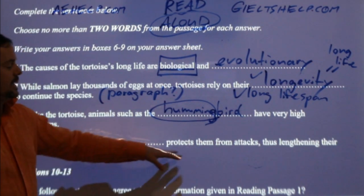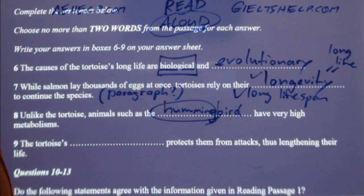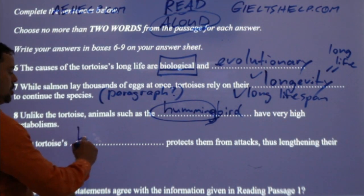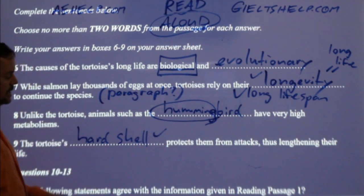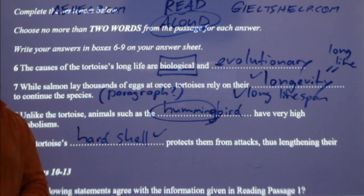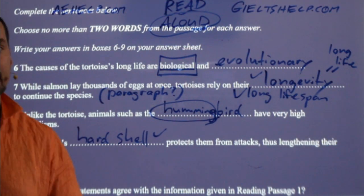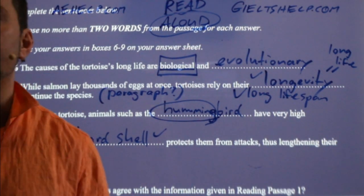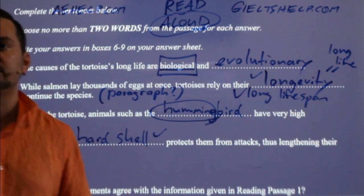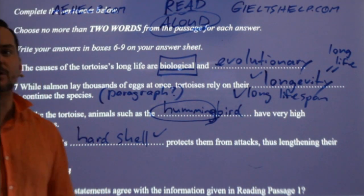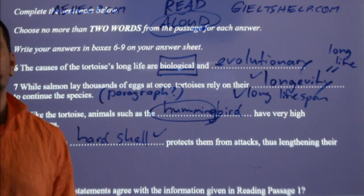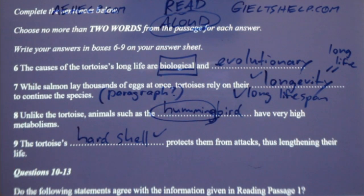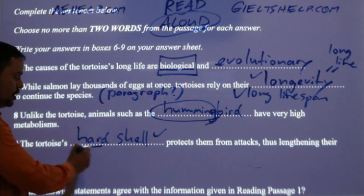Number nine: 'The tortoise's something protects them from attacks, thus lengthening their life.' You should get this — the tortoise's hard shell. If you put just 'shell,' it'll be okay, but I think it's better to put 'hard shell.' They'll take 'outer shell' as well. Careful: S-E-L-L and S-H-E-L-L are very different. Spelling is important. Hard shell — two words.